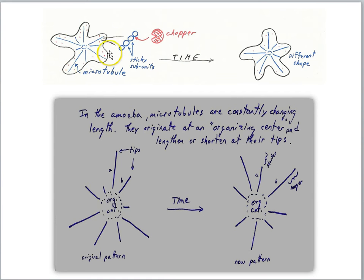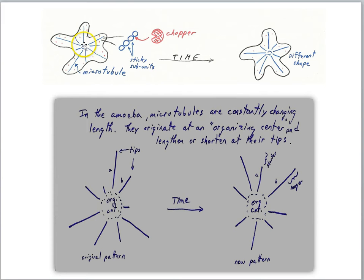Here is an amoeba with blue lines representing microtubules. They seem to be radiating out like spokes on a wheel. Biologists think there is a kind of organizing center for these microtubules, and the microtubules radiate out, giving shape to the overall cell.